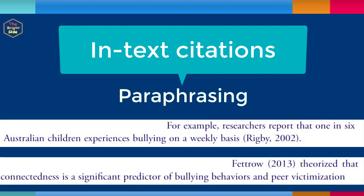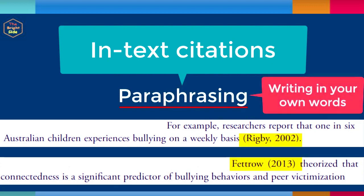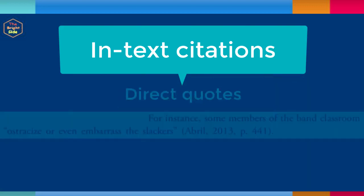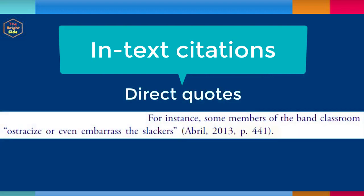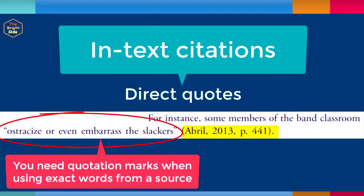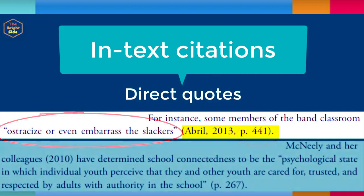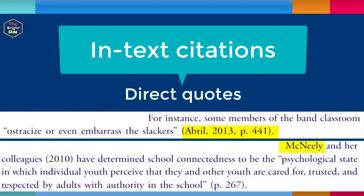The author-date template for in-text citations is used when you are paraphrasing. Paraphrasing means you are writing in your own words without directly quoting the material. If you directly quote the material using the source's exact words and quotation marks, you will also need to include the page number in your citation by listing "p." and the page number. If you mention the author's name in the sentence followed by the year, the page number will still be at the end of the sentence.